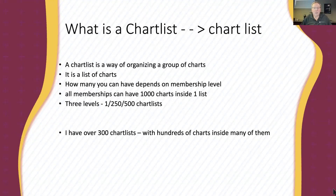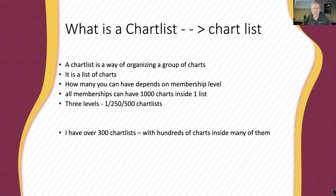So first of all, what is a chart list? A chart list is like a file folder — it's a way of organizing a group of charts. A group of charts could be the NASDAQ 100 or a group of commodity charts. How many you can have depends on your membership level. All memberships can have at least 1,000 charts inside one list, but there are three different membership levels and you could have one, 250, or 500 chart lists. I have well over 300 chart lists with hundreds of charts inside many of them — they're my favorite tool.